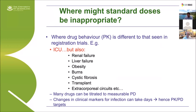If the pharmacokinetics are significantly different from what was seen in registration trials, then you may not be achieving the drug exposures that were targeted from the initial in vitro infection models. This means there are patient populations — not only in the ICU but also renal and liver wards, patients with obesity, burns wards, cystic fibrosis, and patients receiving extracorporeal therapies — where standard doses won't achieve the exposures we aim for, risking failure of therapy.